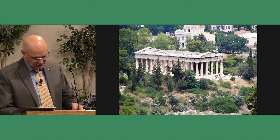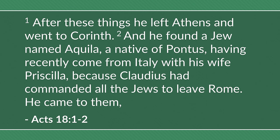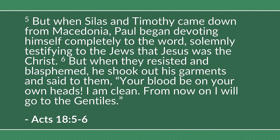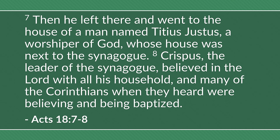The story of the establishment of the church is found in Acts chapter 18. After these things, Paul left Athens and went to Corinth and found a Jew named Aquila, a native of Pontus, having recently come from Italy with his wife Priscilla because Claudius had commanded all the Jews to leave Rome. He came to them and because he was of the same trade, he stayed with them — by trade they were tent makers. He was reasoning in the synagogue every Sabbath, trying to persuade Jews and Greeks. But when Silas and Timothy came from Macedonia, Paul began devoting himself completely to the word, testifying to the Jews that Jesus was the Christ. But when they resisted and blasphemed, he shook out his garments and said, 'Your blood be on your own heads. I am clean; from now on I will go to the Gentiles.'